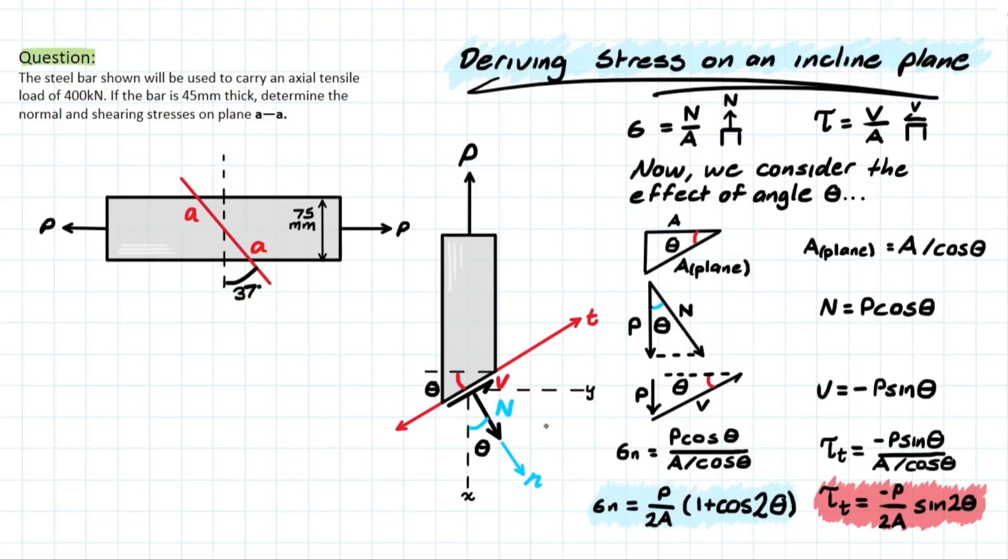So the shear and normal stress can be derived using the following equations here. In a general case where we have the x-axis and the y-axis parallel to that normal force, and then the x-axis parallel to that shear force, we have these formulas already derived. But now we need to consider how theta is going to affect this problem.